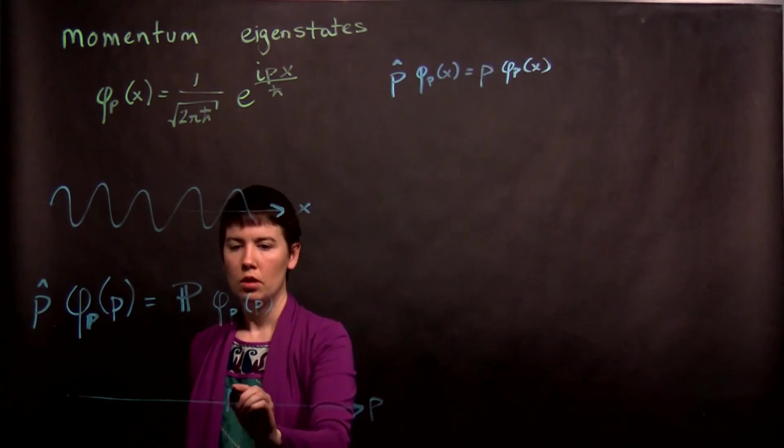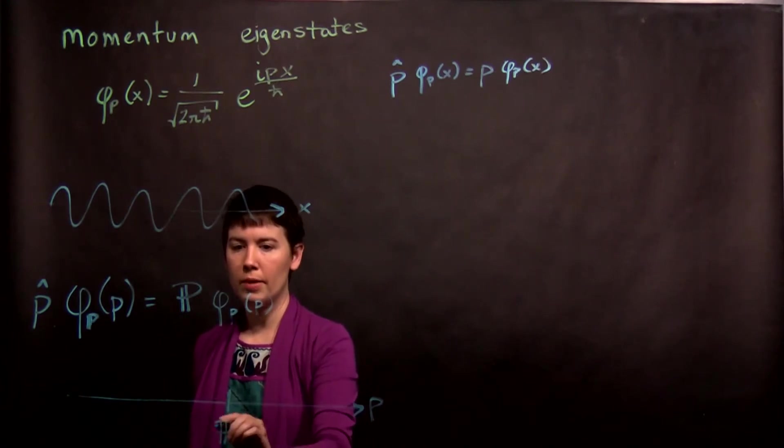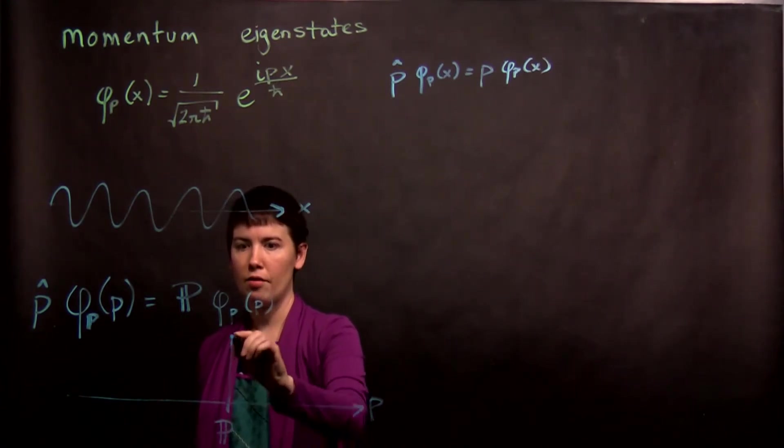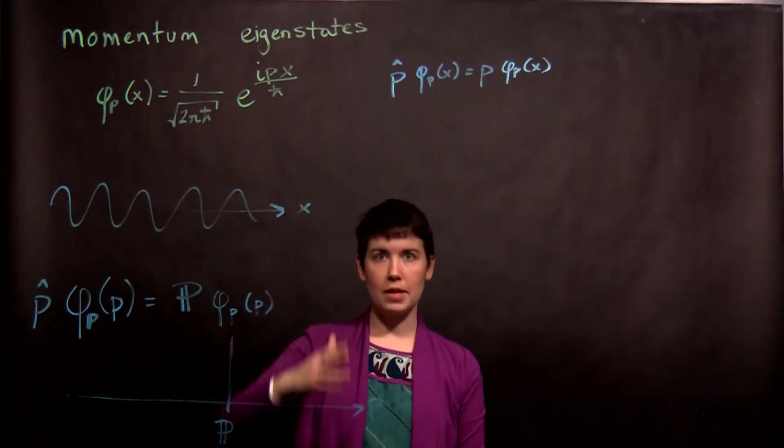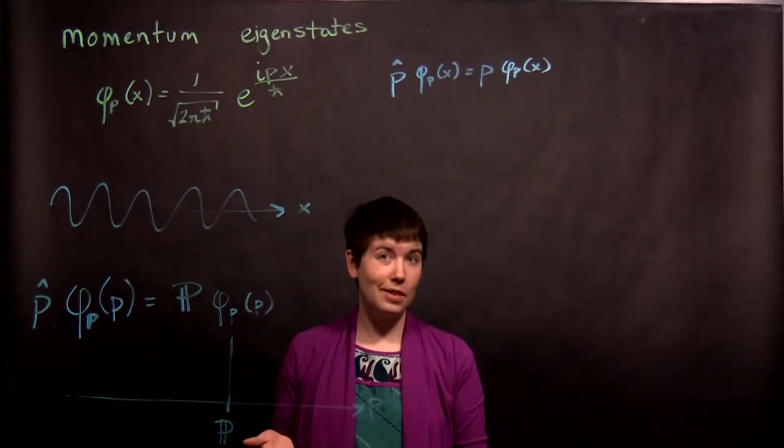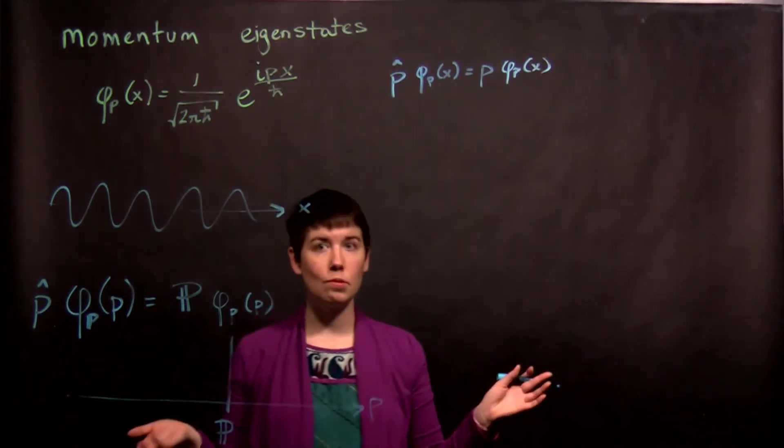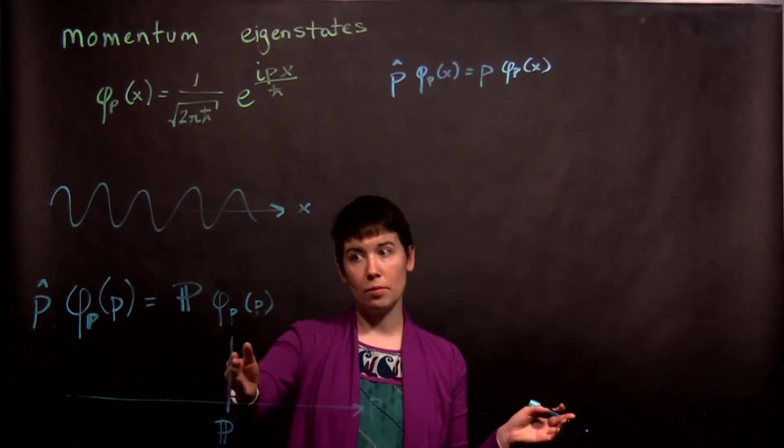So what that means is that at that value of momentum, I have my thing. This is basically a delta function, and everywhere else it's zero. The only value of momentum it has is that.